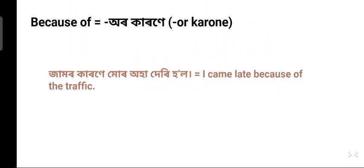Next: 'because of' in Assamese — 'কাৰণে' (karone). We already learned that 'karane' means 'for'; it also means 'because of'. Example: 'Jam or karone mur aha deri hol' — I came late because of the traffic jam. 'Jam' means traffic jam, 'jam or karone' means because of the traffic jam, 'mur' means my, 'aha' means coming, 'deri' means late, and 'hol' means happened.